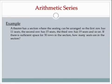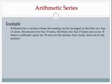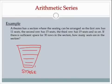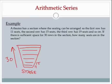Here's a word problem: a theater has a section where the first row has 11 seats, the second row has 15, the third row has 19, and so on. As you go back from the stage, the rows get larger and larger. There are enough rooms for 30 rows of seats. So how many seats are in the section? We could add 11 plus 15 plus 19 plus 23 for all 30 numbers, or we could just use a formula.